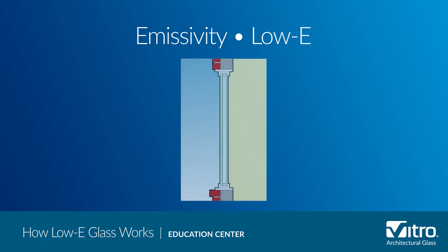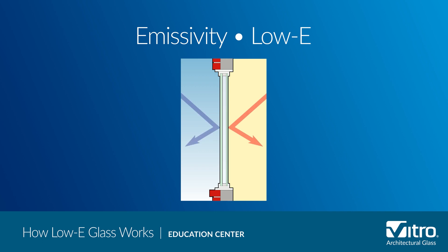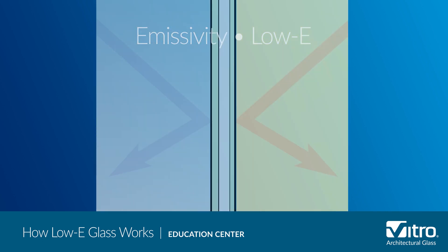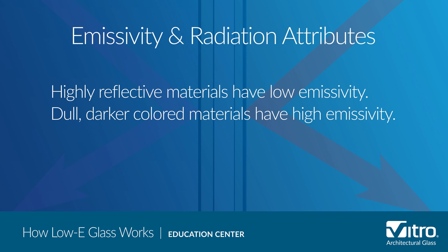Low-e coatings have been developed to prevent as much ultraviolet and infrared light from passing through as possible, while optimizing the amount of visible light transmitted. When heat or light energy is absorbed by glass, it is cooled by moving air or re-radiated by the glass surface. The relative ability of a material's surface to radiate energy is known as emissivity. In general, highly reflective materials have a low emissivity and dull, darker colored materials have a high emissivity.